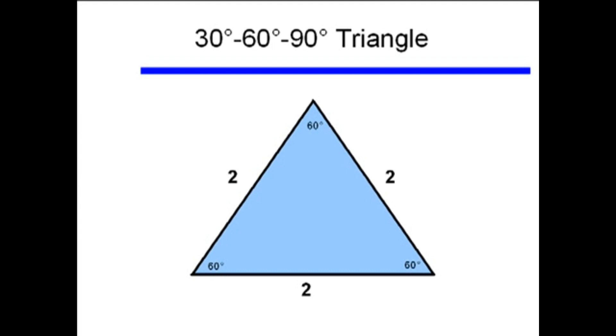So what am I going to do? Well, I'm going to bisect one of the 60 degree angles into two equal halves of 30 degrees each. This gives us two identical triangles, both with angles 30, 60, and 90 degrees.